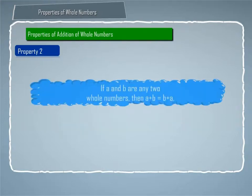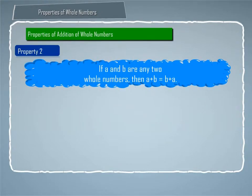Property 2: If A and B are any two whole numbers, then A plus B is equal to B plus A. This property is known as commutative property of addition of whole numbers.